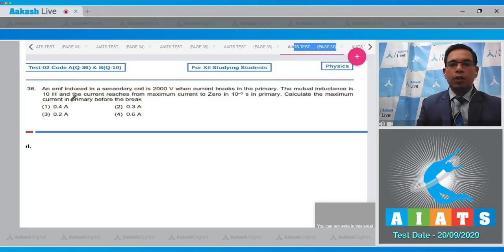Question number 36 states that an EMF induced in a secondary coil is 2000 volts when current breaks in the primary. The mutual inductance is 10 henry, and the current reaches from maximum current to 0 in 10 to the power minus 3 seconds in the primary. Calculate the maximum current in the primary before the break.